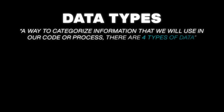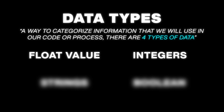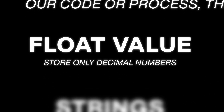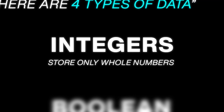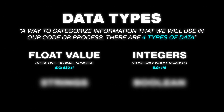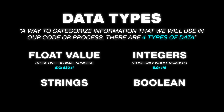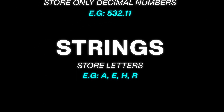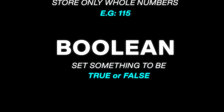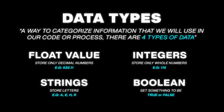Today we need to learn some basic concepts like data types. Data types are a way to categorize information that we will use in our code or process, and there are four of them. Two of them store numbers: the first one is a float value, which stores only decimal numbers — numbers with a comma. We then have integers, which store only whole numbers. There are also two other types: we can store letters using strings, and we can set something to be true or false using a boolean. Booleans are really used for functions and other kinds of statements.